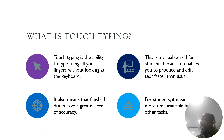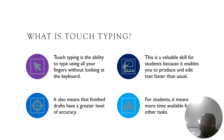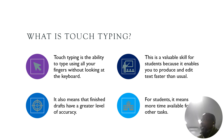What is touch typing? It is the ability to type using all your fingers without looking at the keyboard. When we talk about touch typing, we are not only talking about typing using all the fingers, but also about not looking at the keyboard. You can close your eyes and you should be able to type. This is actually one of the most valuable skills for students because it enables you to produce, write, and edit your text or drafts much faster than usual.